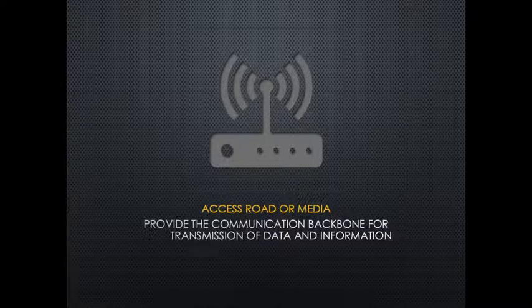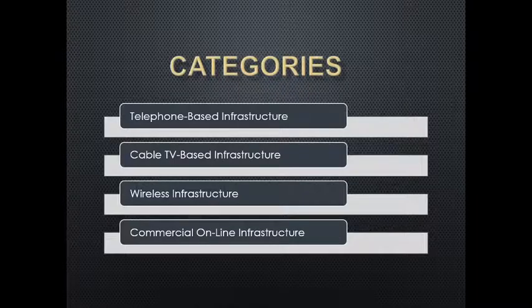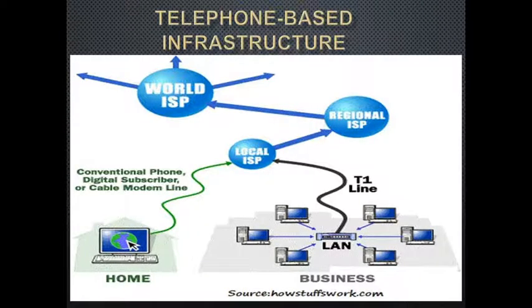The second component is access road or media, also called local on-ramps. It provides the communication backbone for transmission of data and information. After a consumer accesses a network using network access equipment, this access media helps transmit data and information. Access providers are differentiated into major categories: telephone-based infrastructure, cable TV-based infrastructure, wireless infrastructure, and internet or commercial online infrastructure.